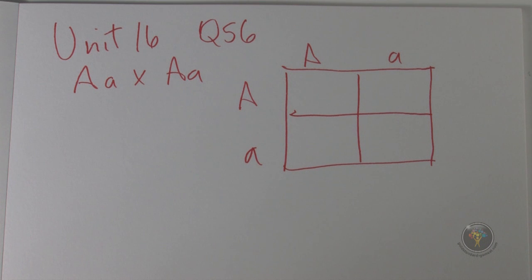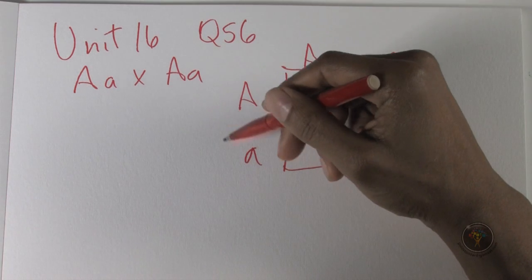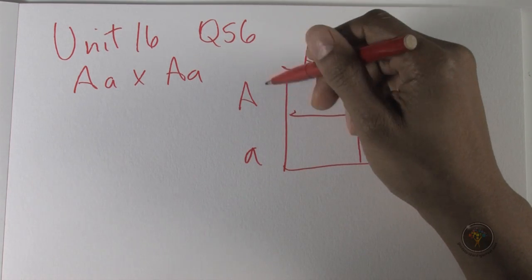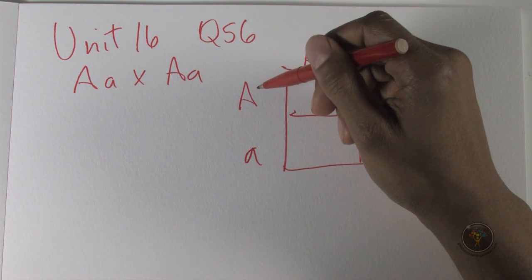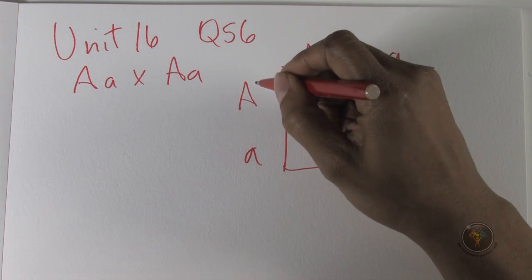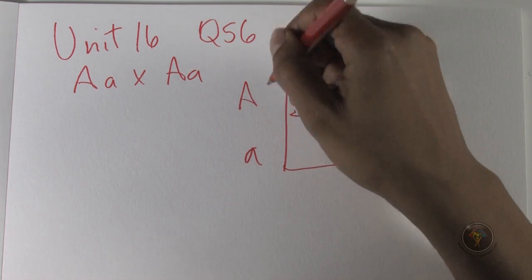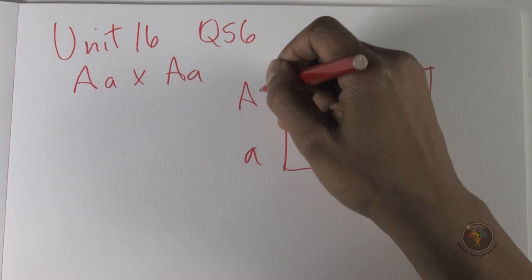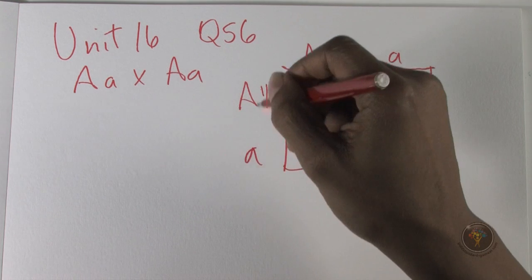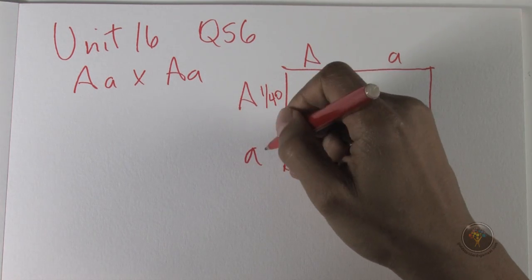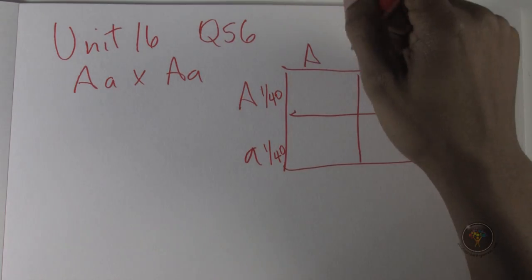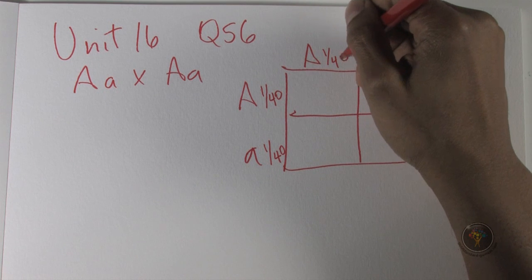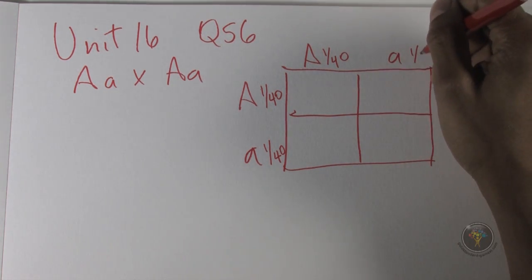If a person is heterozygous for the condition, and this person was chosen randomly with a 1 in 20 chance, then the chance that this person has a normal allele is going to be 1 in 40, and the chance that this allele is abnormal is 1 in 40. And for this allele as well, it's 1 in 40, and for this allele, it is 1 in 40.